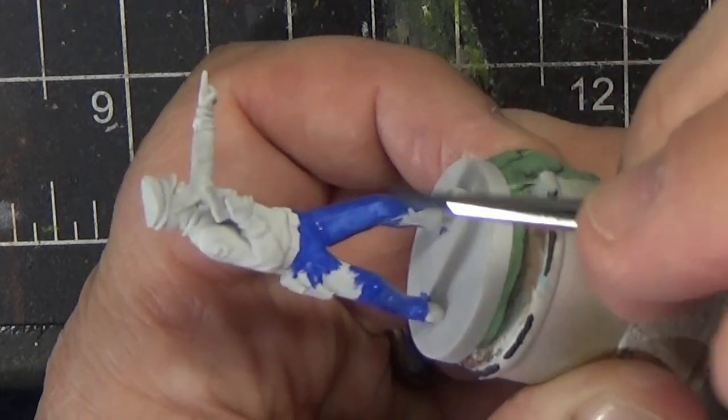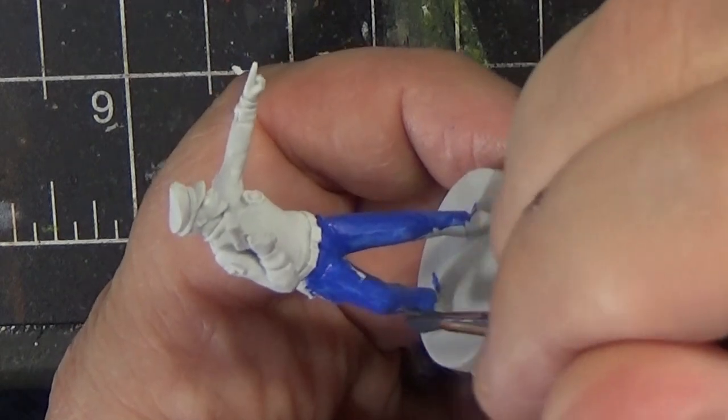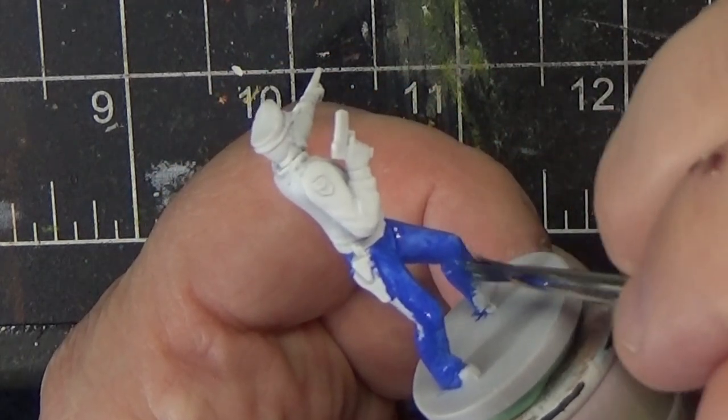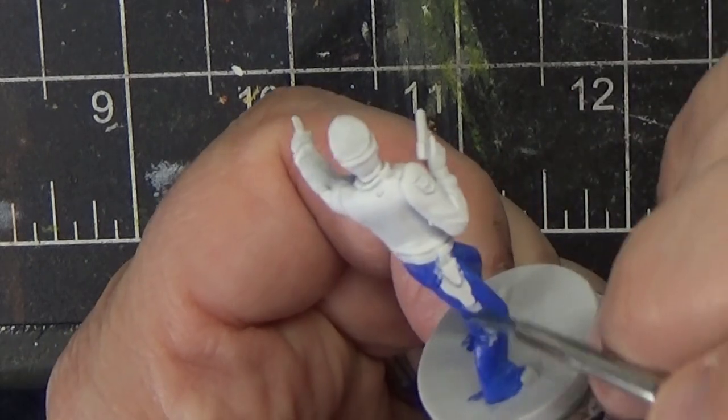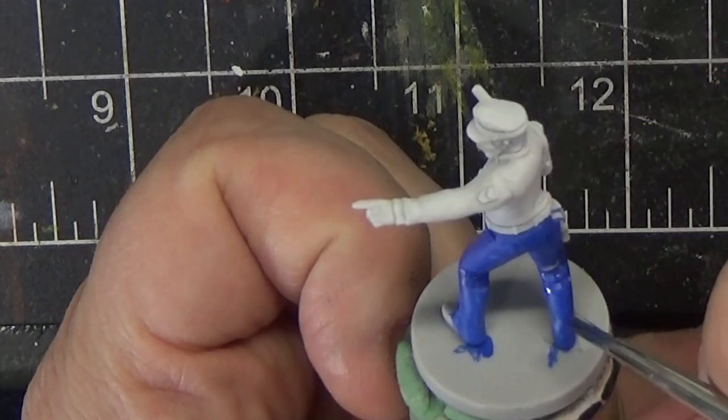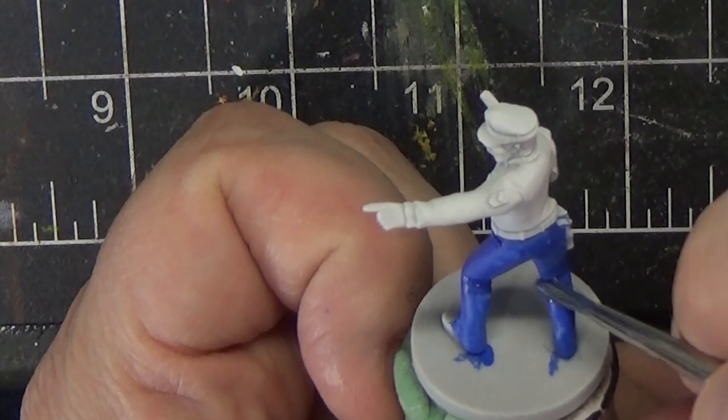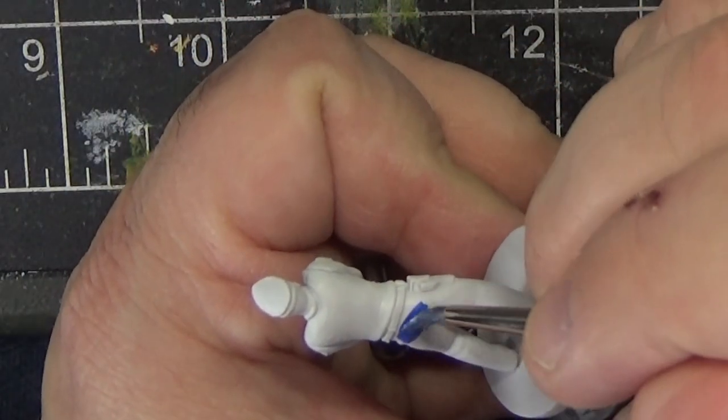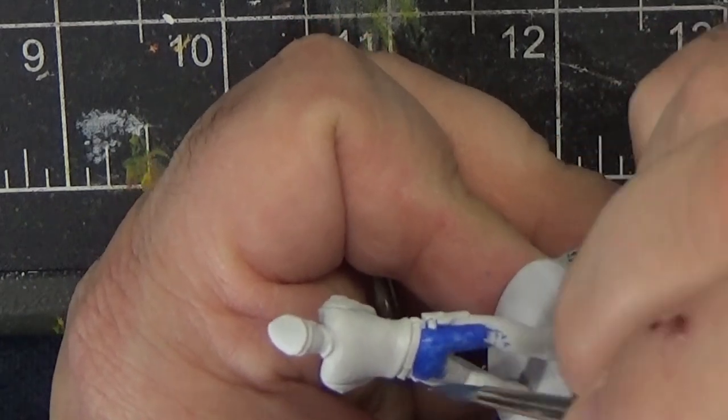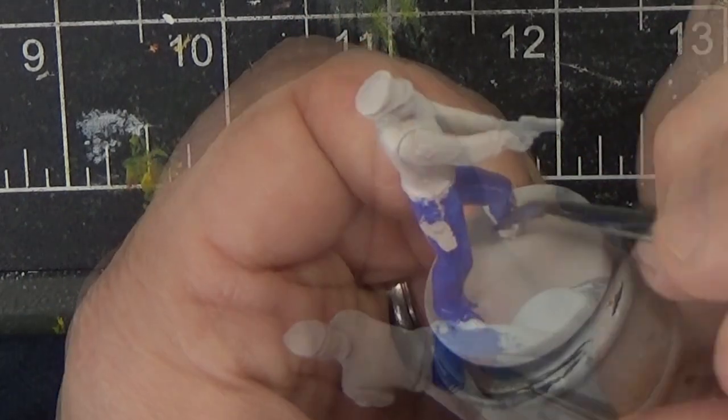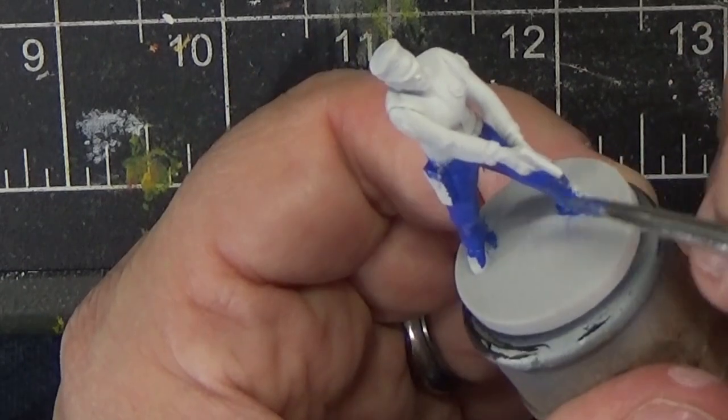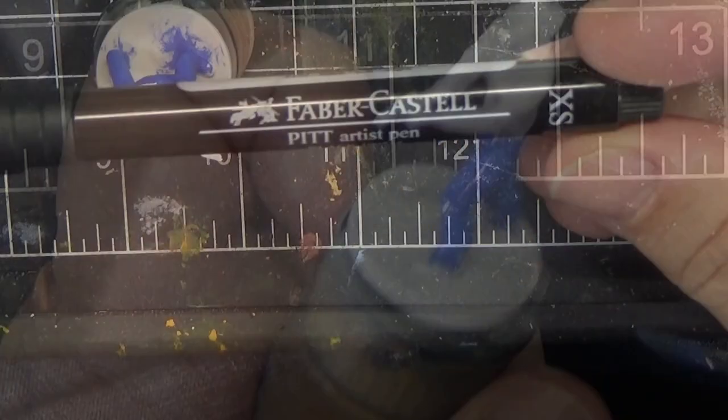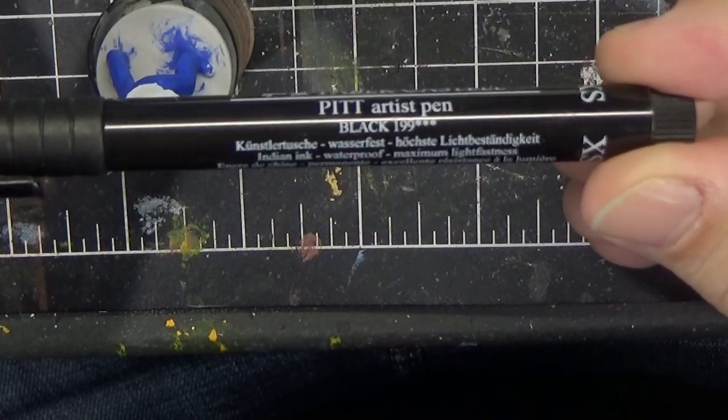This model is actually the alternate sculpt beat cop from the Kickstarter all-in package. I'll be switching between this and the other sculpt throughout this video, but the colors are pretty much the same for both, so you should be able to follow along regardless of which one you're painting.